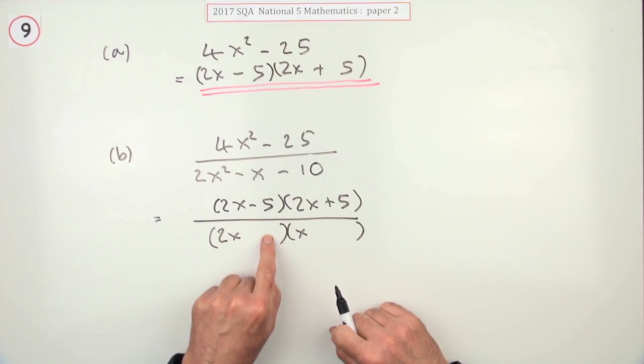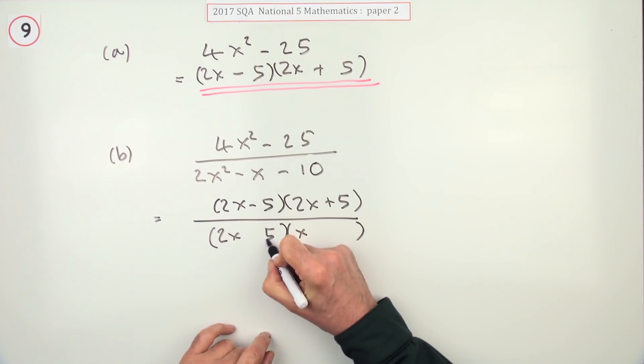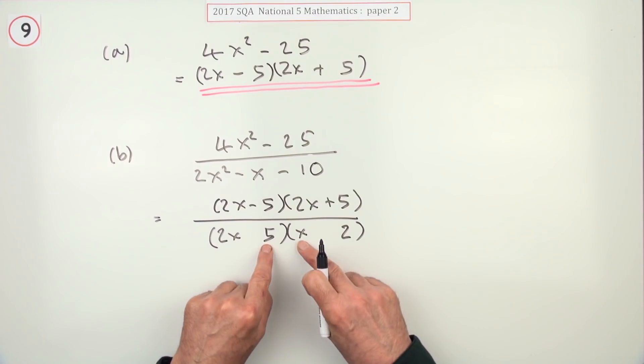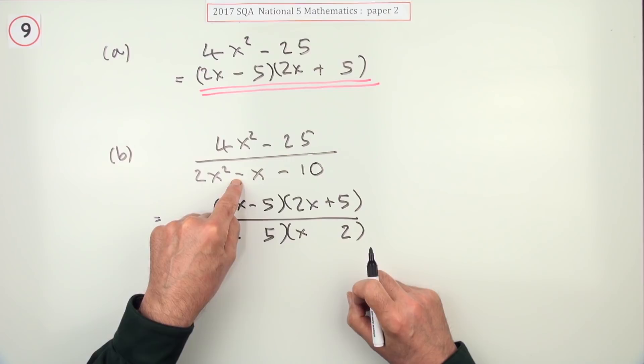Well the 2 won't go there, it can't go with the 2. The 5 must go there and the 2 goes there. So that way I've got a 5x and a 4x. If that term's negative in the middle, the 5x must win the negative.